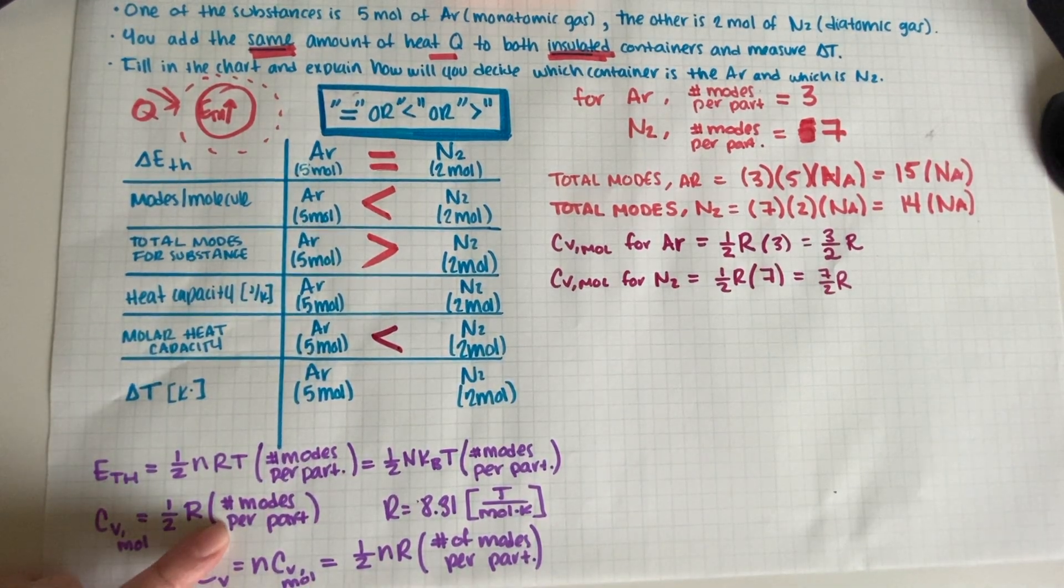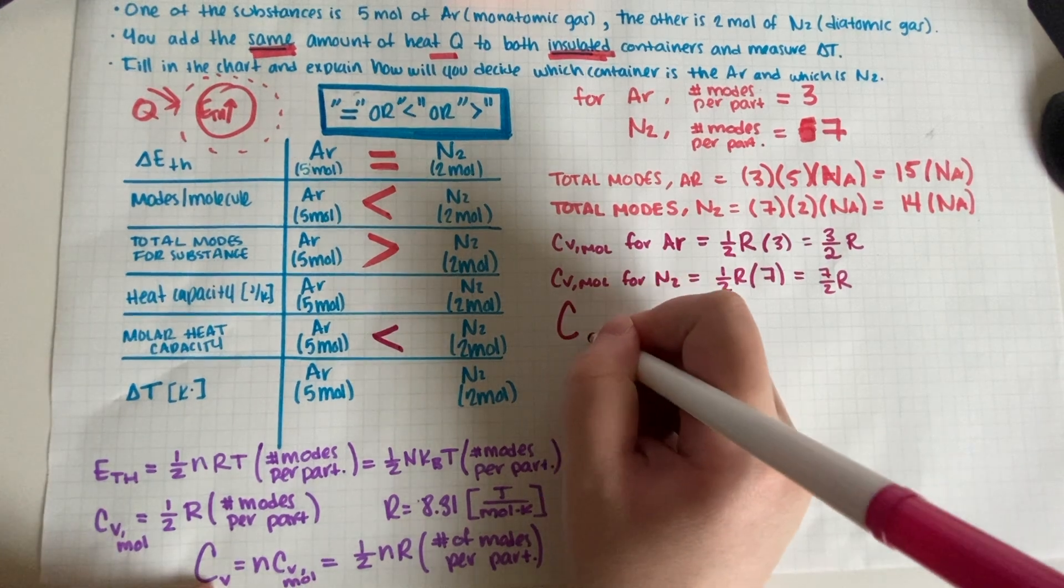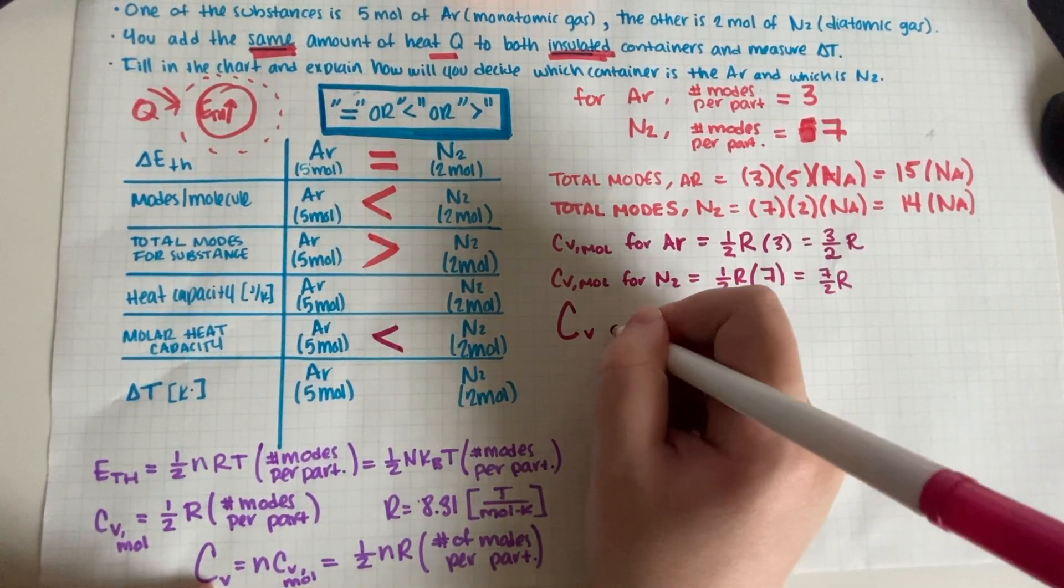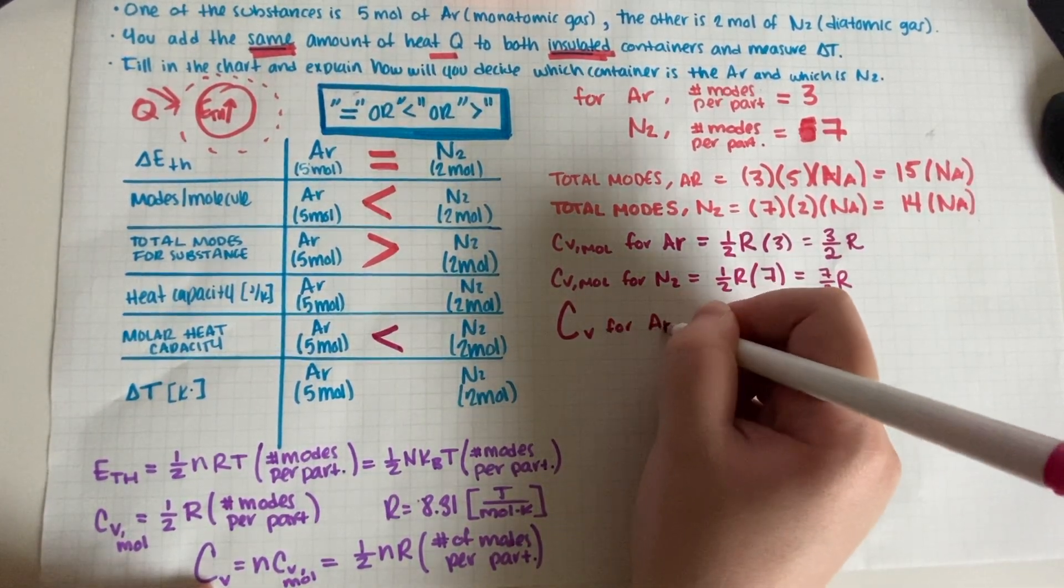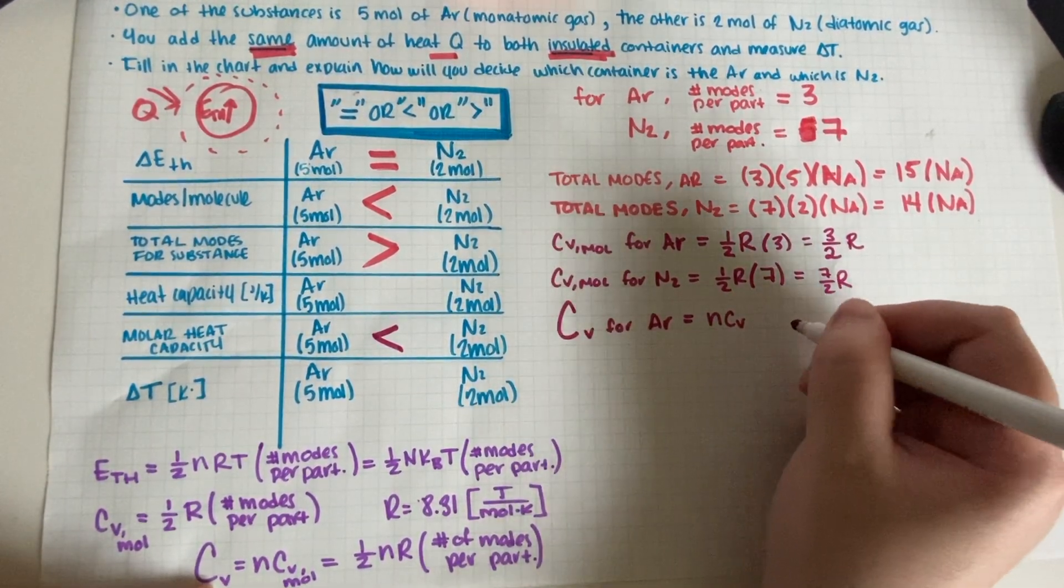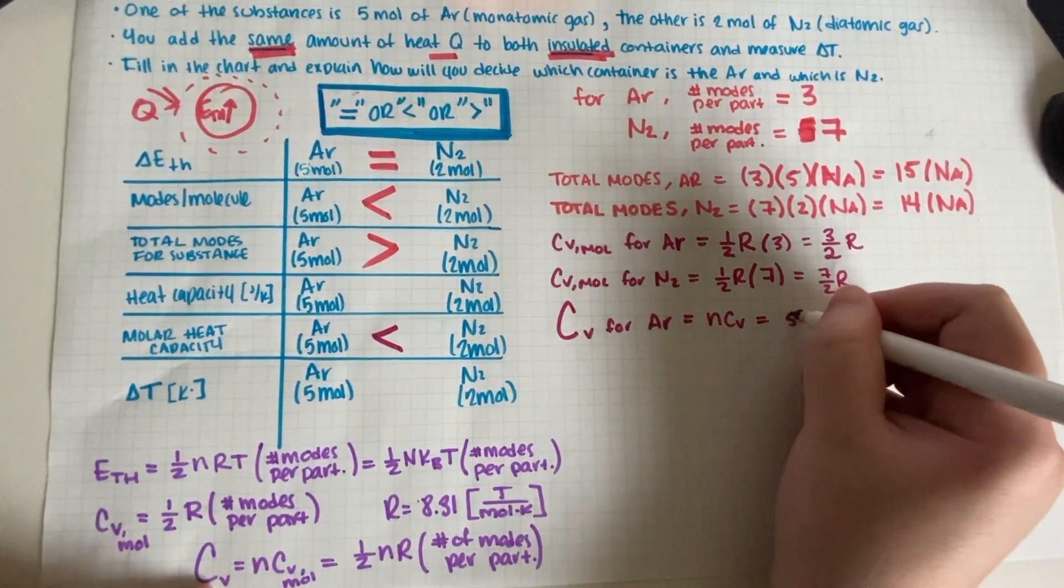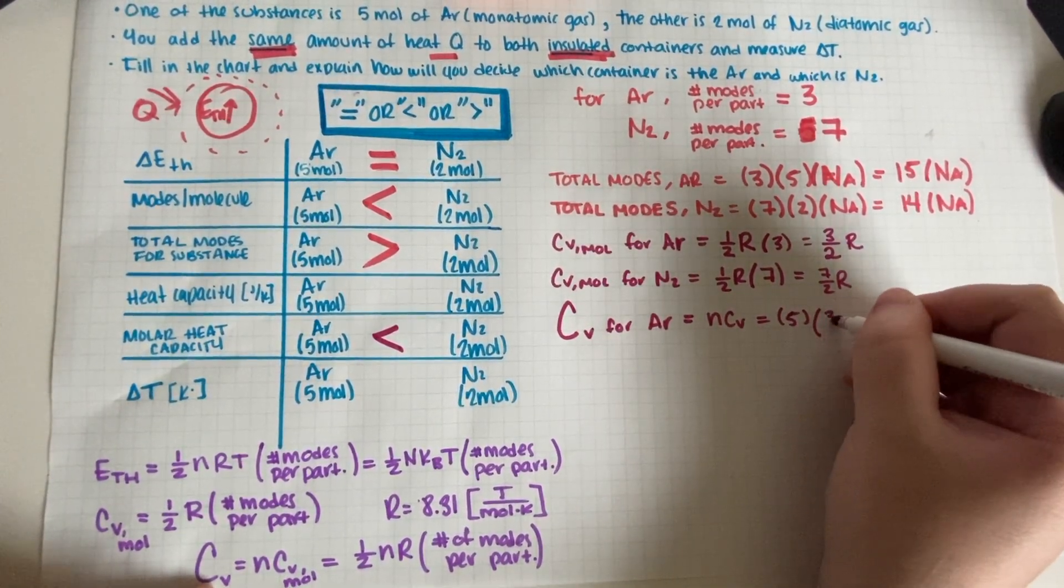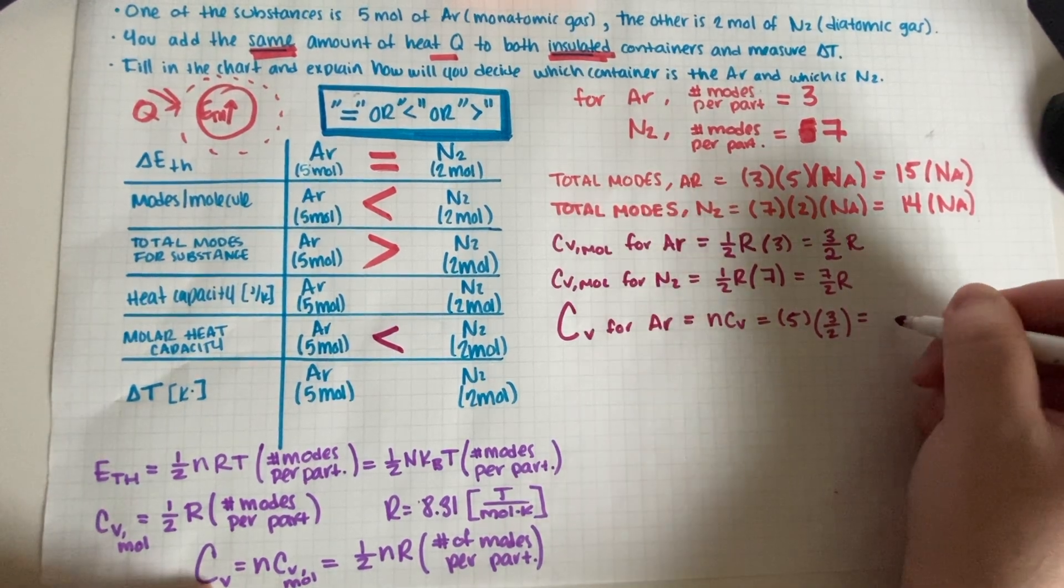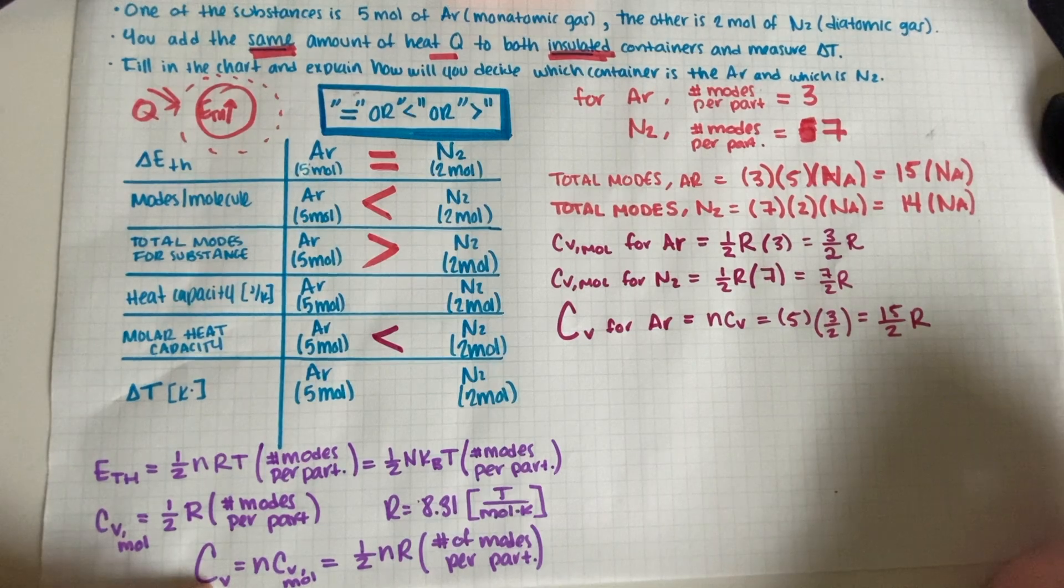Now for big C we have to multiply. Cv for Ar is equal to n times little c, so Ar is five moles, so this is five times three halves, so this is 15 halves of r.